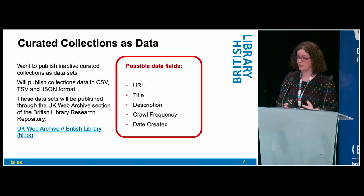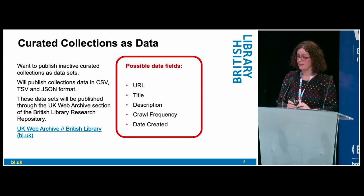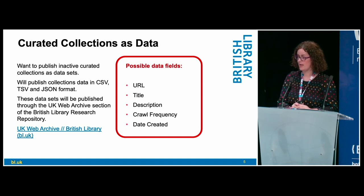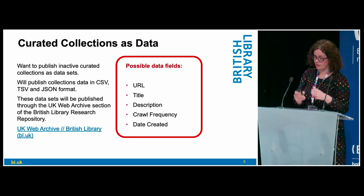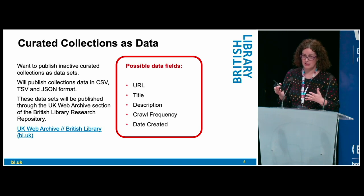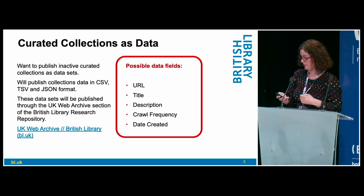We want to publish these as active collections in CSV, TSV, and JSON format. They will be published through our repository at the British Library, and some of the possible fields include URLs, title descriptions, crawl frequency, and date created. We're now getting very close to starting the project to publish these collections, having figured out what metadata fields we're going to publish.